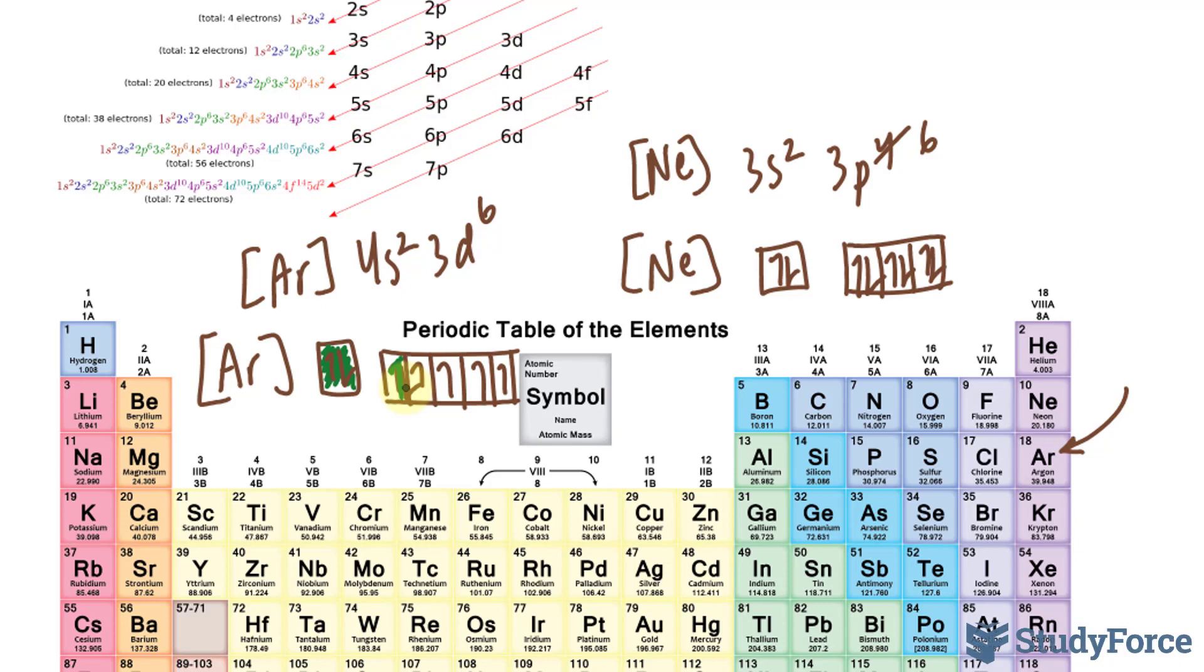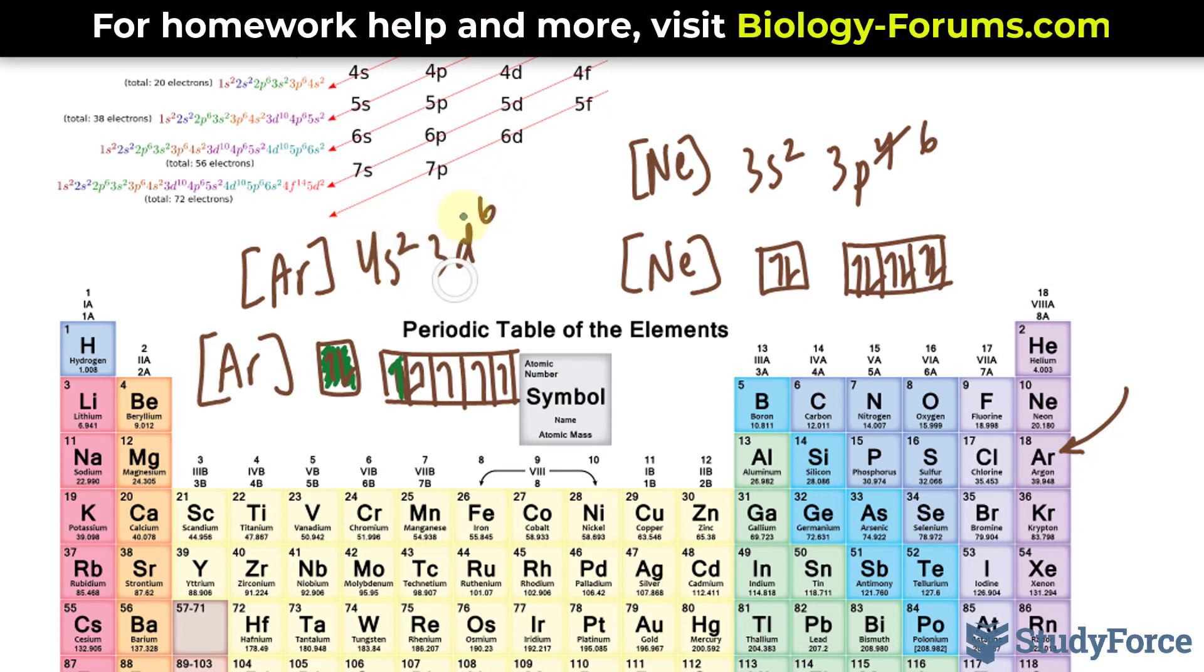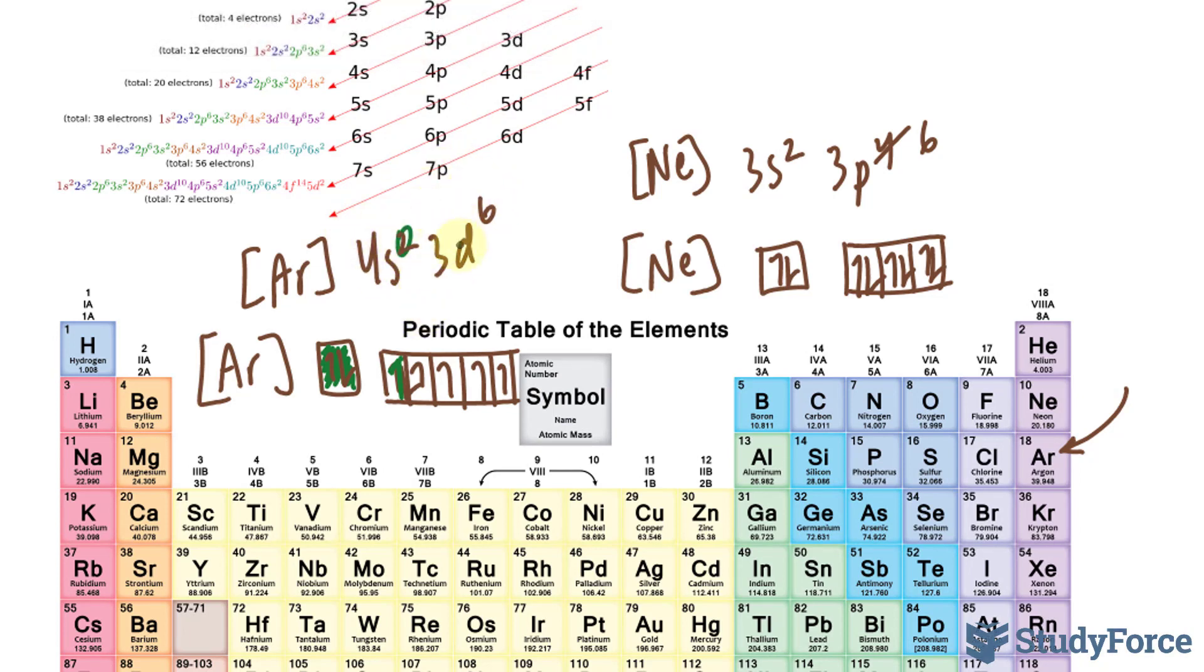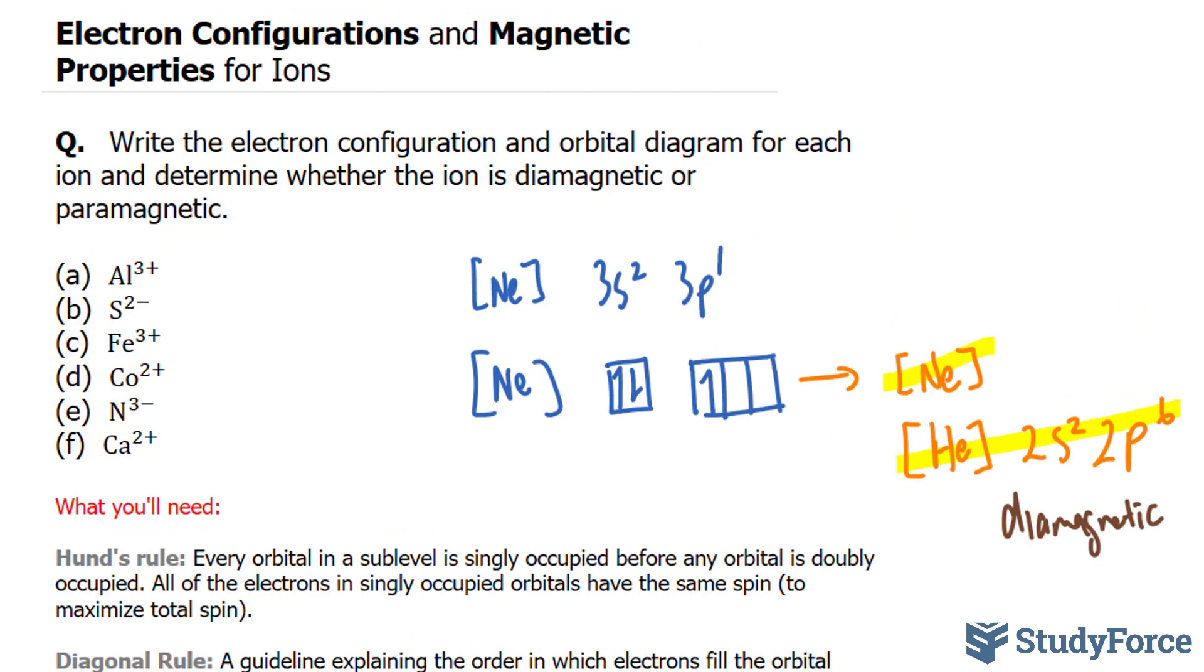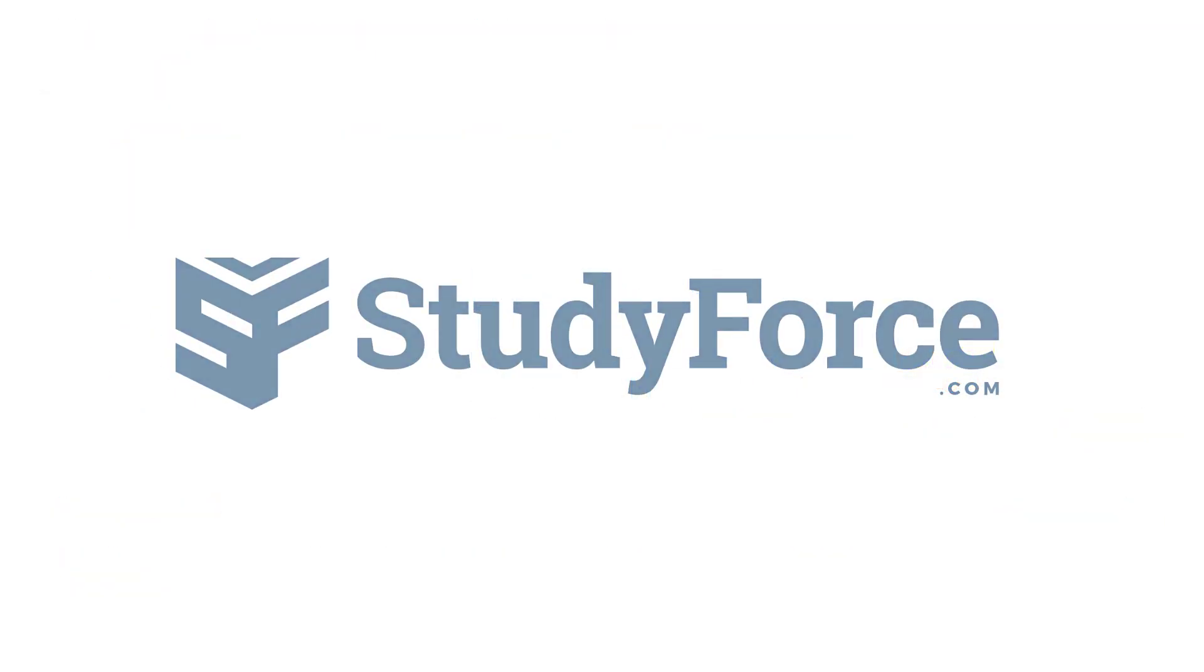And because there are unpaired electrons, notice that these are all unpaired. This is paramagnetic, and we rewrite this as 4s0 and 3d5. And there you have it. Three examples on how to write electron configurations. If you want the answers to questions D, E, and F, make sure you watch part two of this series. We'll see you soon.